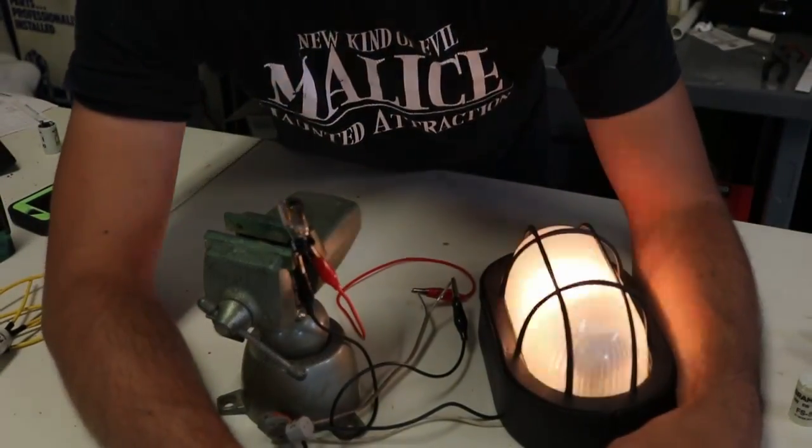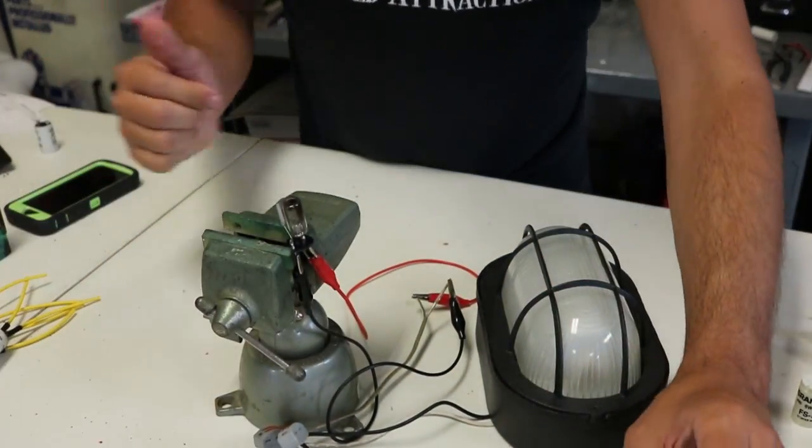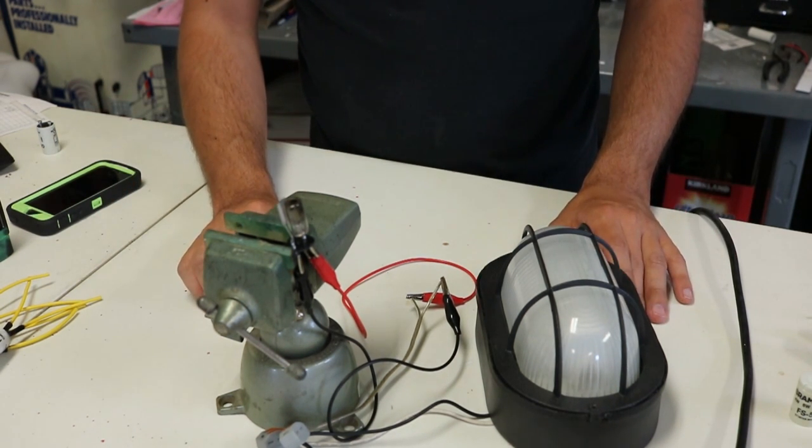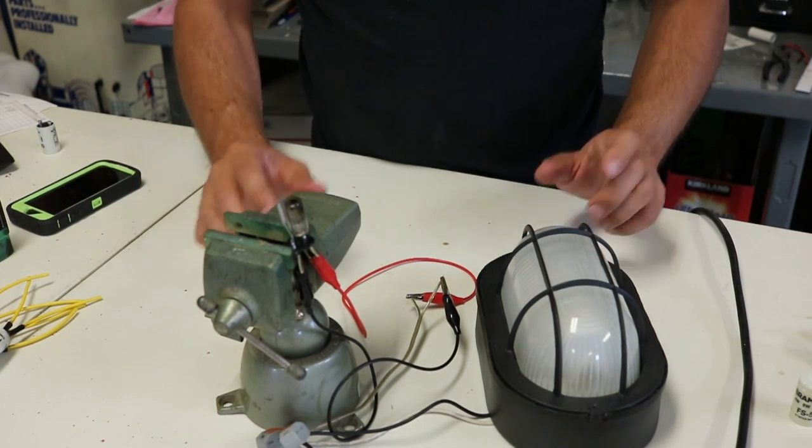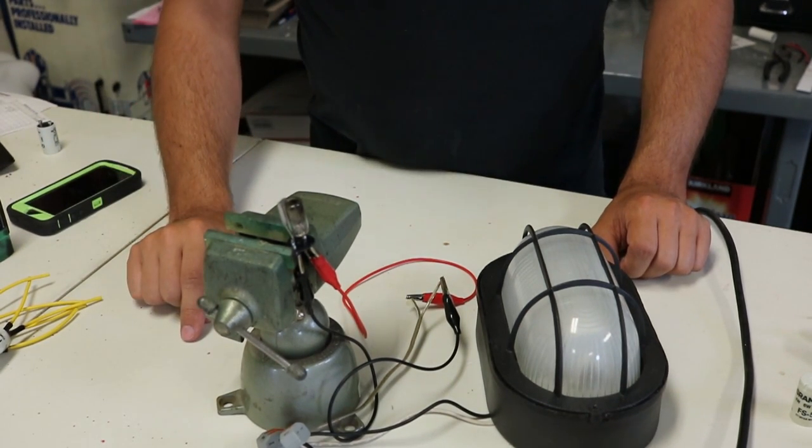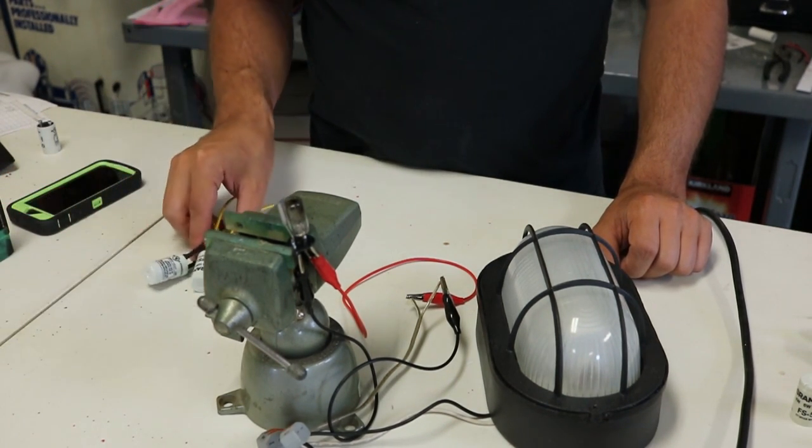Now, we all know incandescent bulbs burn out rather frequently depending on use. Obviously, the more you turn them off and on, the quicker they go out. This will eventually burn out, which is why I made a pile of them.